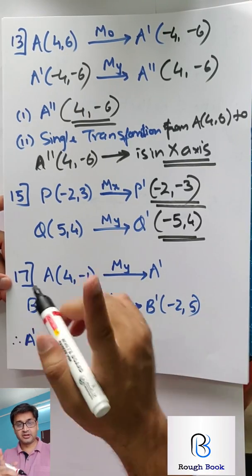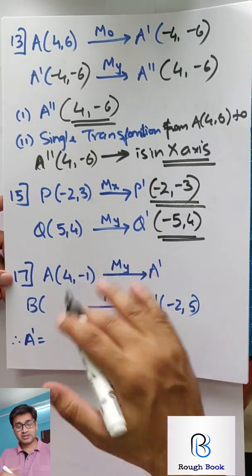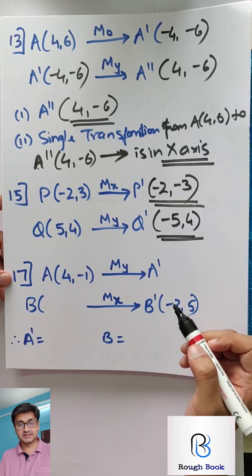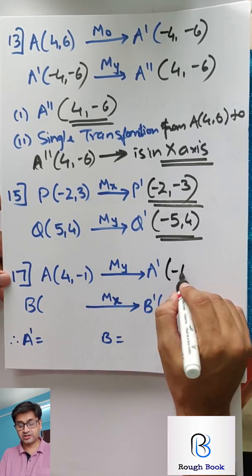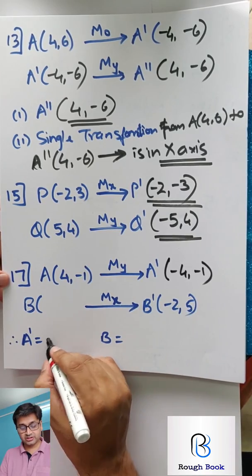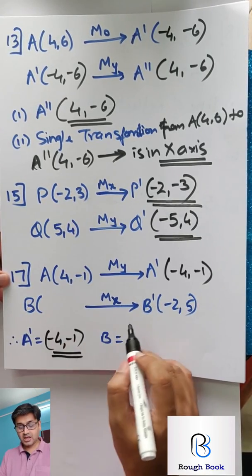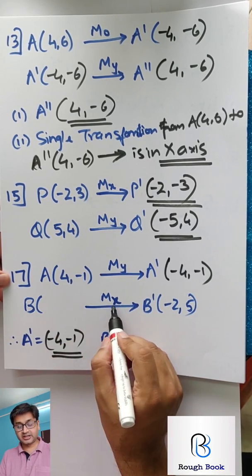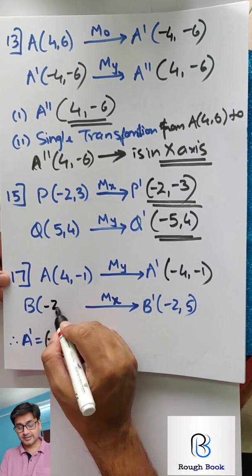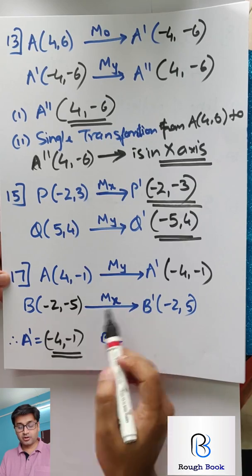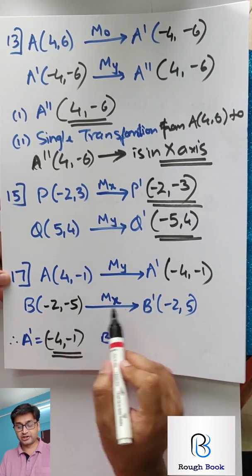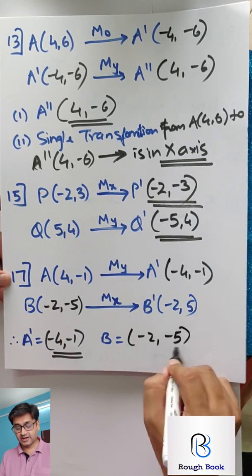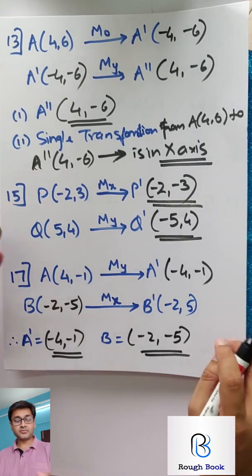17. A, 4 minus 1, reflecting in Y axis. So Y axis what will happen? X will change. So first question is get A dash, we got it. Now B dash, you're getting on reflecting in X axis for B. So B reflecting in X axis, so go reverse. X means Y will change. So minus 2 minus Y. This reflecting in X, so Y changes and you get this. So what is your coordinate B? Minus 2 minus 5. Who got all these correct? Brilliant guys.